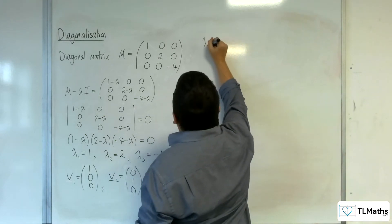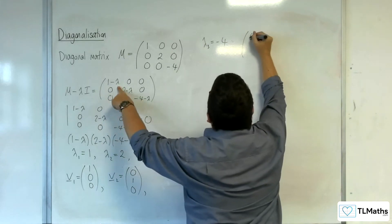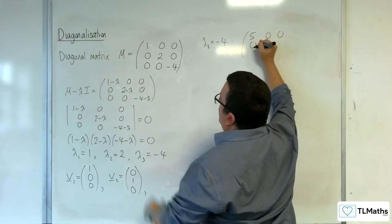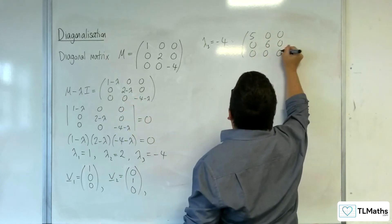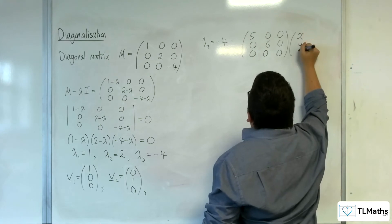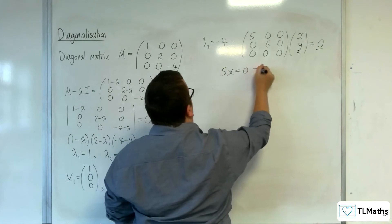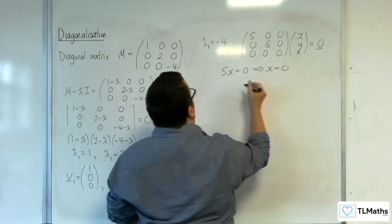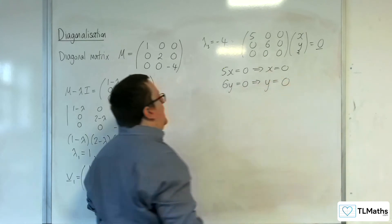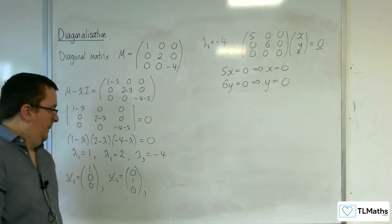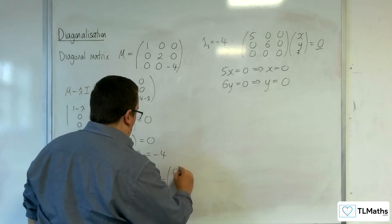For λ₃ = -4: 1 - (-4) = 5, 2 - (-4) = 6, giving the matrix (5, 0, 0), (0, 6, 0), (0, 0, 0). So 5x = 0 meaning x = 0, and 6y = 0 meaning y = 0, while z can be any non-zero value. So our eigenvector is (0, 0, 1).